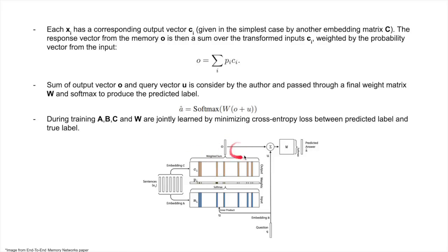Then we take the sum of output and internal state, multiply with weight matrix, and take the softmax to predict the answer. During training, we take A, B, C, and W and jointly learn them by minimizing the cross entropy loss between the predicted label and true label.